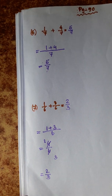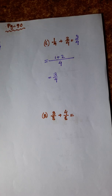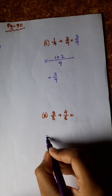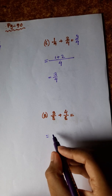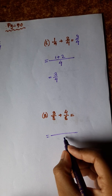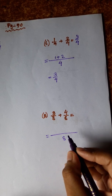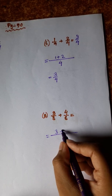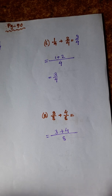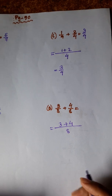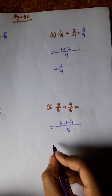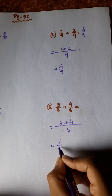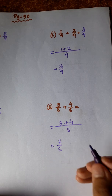Denominator same. For the fractional addition, the numerator: 4 plus 3 equals 7. So the answer is 7 by 8.